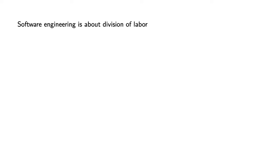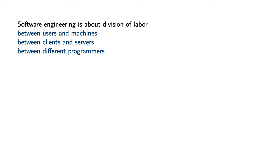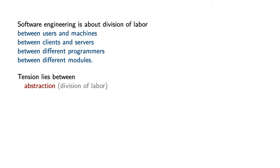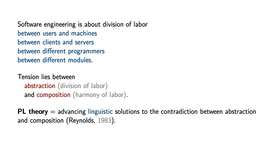Software engineering is about the division of labor — between users and machines, between clients and servers, between different programmers, and between different modules. Tension lies between abstraction, which embodies the division of labor, and composition, which embodies the harmony of labor. PL theory as a discipline is a particular approach to deal with this tension: we advance linguistic solutions to the contradiction between abstraction and composition.